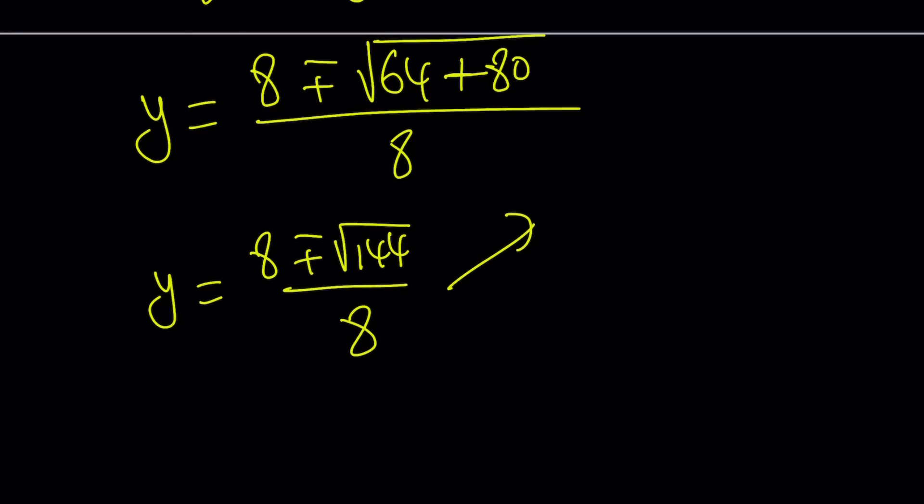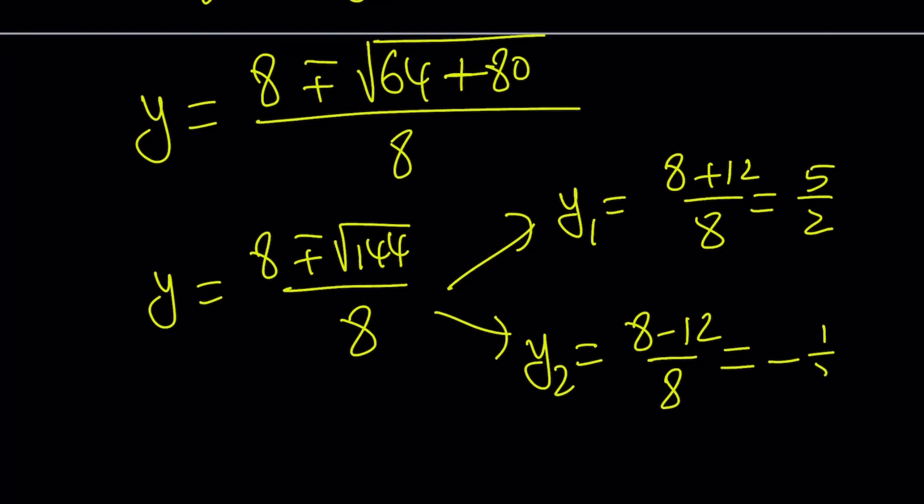Let's write it like this: y sub 1 is 8 plus 12 over 8, and y sub 2 is 8 minus 12 over 8. I wanted to split it up so I can find rational answers. This is 20 divided by 8, which is 5 halves. Notice I just simplified it. This is negative 4 over 8, which is negative 1 half. So we got two results for y because we solved a quadratic equation. Nobody asked why, but I wanted to answer it.